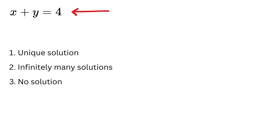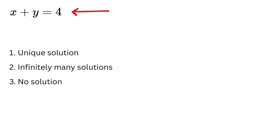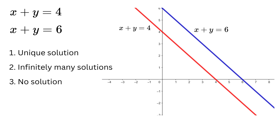If both equations were multiples of each other — like x + y = 4 and 2x + 2y = 8 — they would represent the same line and there would be infinitely many solutions. But if one equation is x + y = 4 and the other is x + y = 6, the lines are parallel, they never meet, and we say the system has no solution.